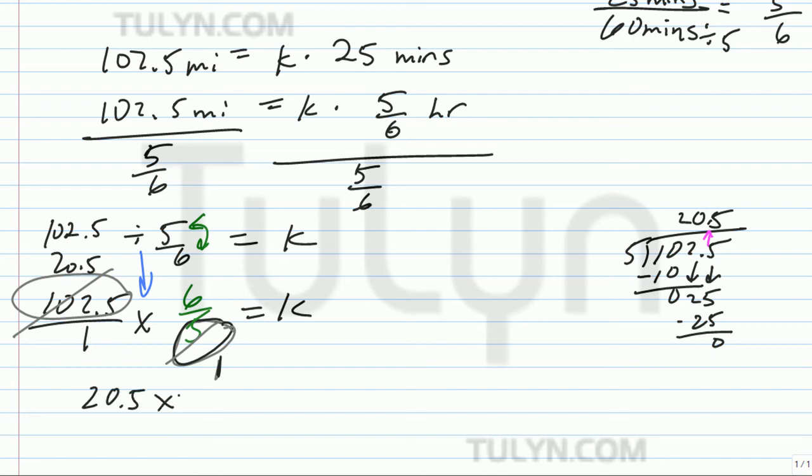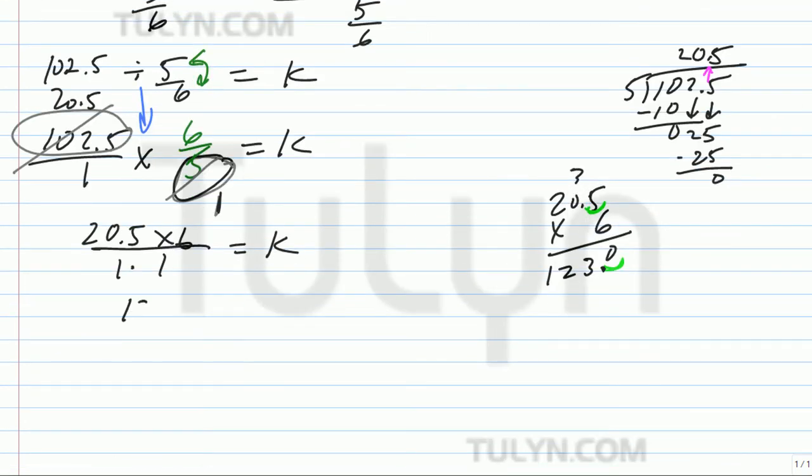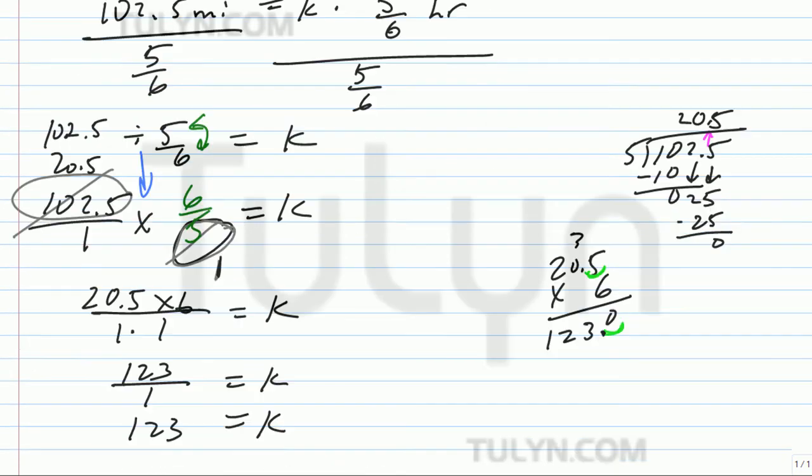So then 20.5 at the top right here. So 20.5 times 6 over 1 times 1 equals the unit rate. Now what is 20.5 times 6? Let's go ahead and find out. 5 times 6 is 30. 0 here, 3 on top. 0 times 6 is 0. Plus 3 is 3. 2 times 6 is 12. Go ahead and use the same number of decimal places your multiple can. That's going to be 123.